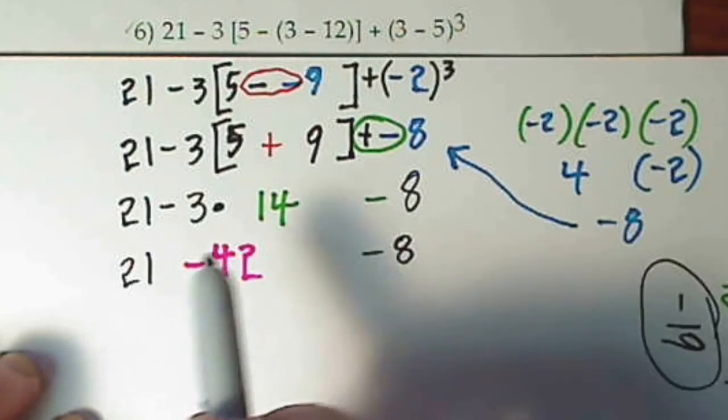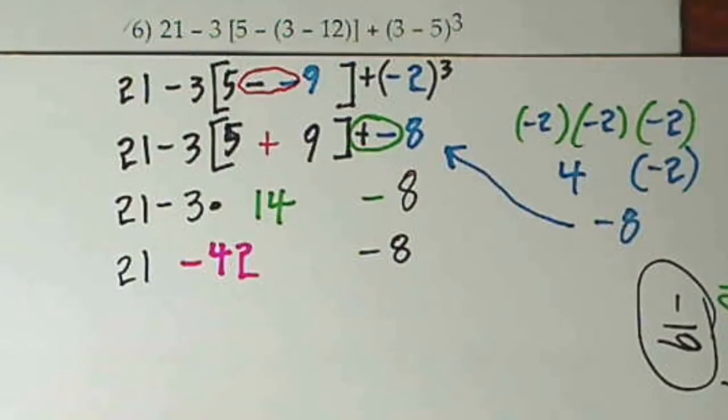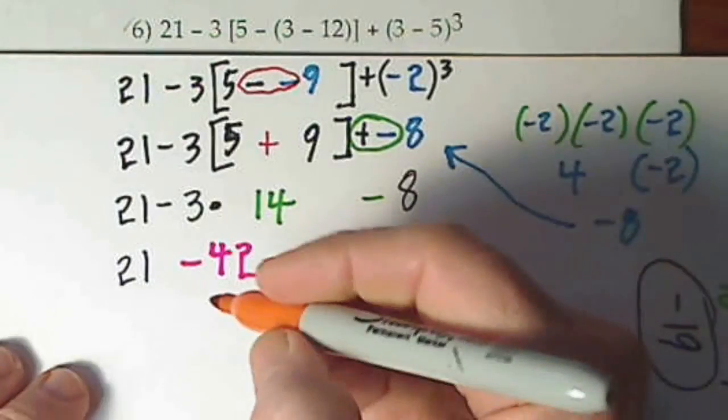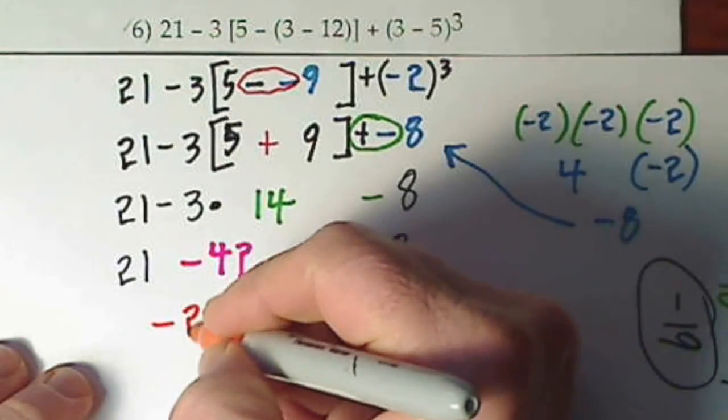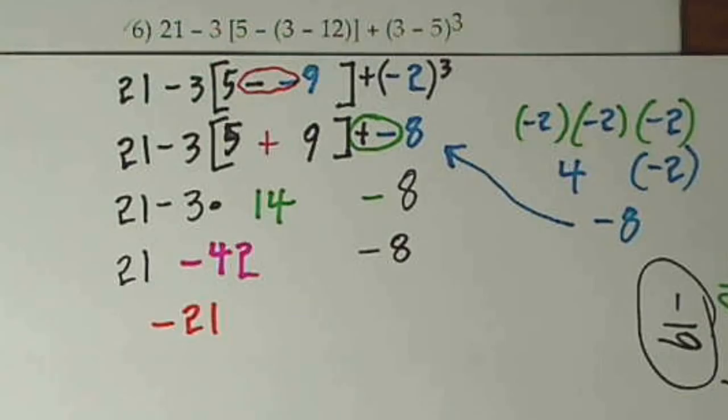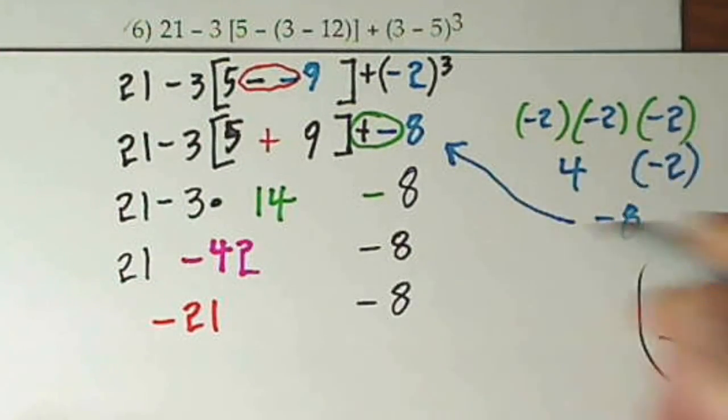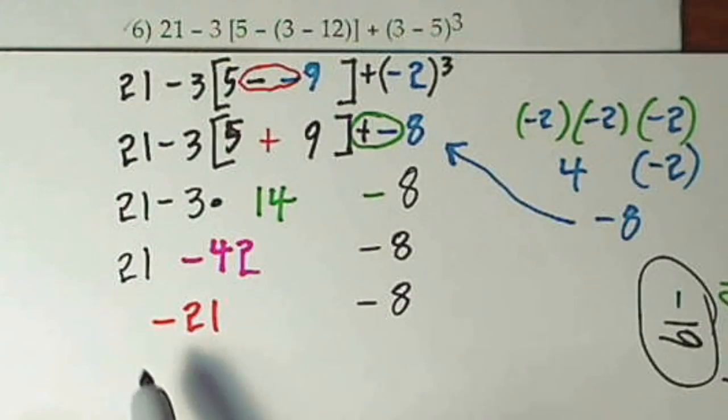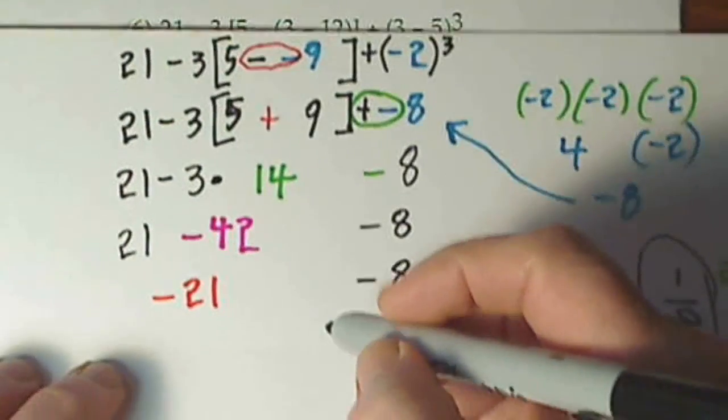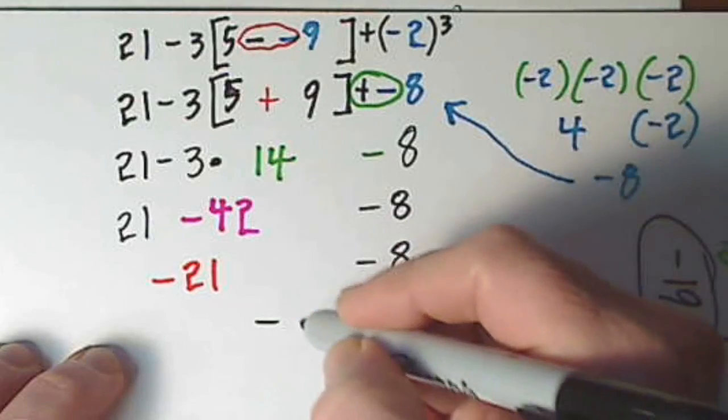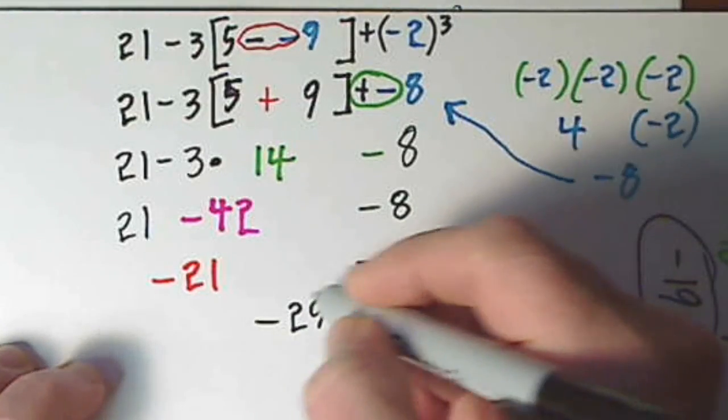Positive 21 negative 42 yields a negative 21. Bring down what I haven't touched, which is this increasingly patient negative 8. Now the signs are the same, you add and keep your sign. So there's a negative 29.